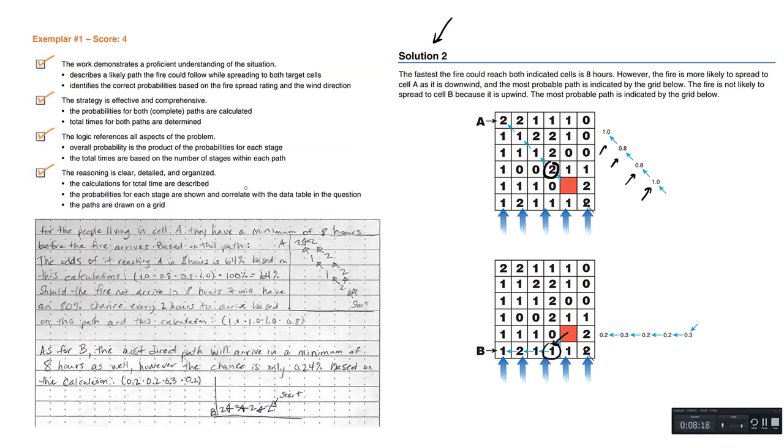So this question is quite rich. Although this question can be quite complicated, let's look at another example of a four out of four. The student wrote the solution here. For the people living in cell A, they have a minimum of eight hours before the fire arrives based on this path. Here's a nice picture. And this is only one singular path. It's not so sophisticated.